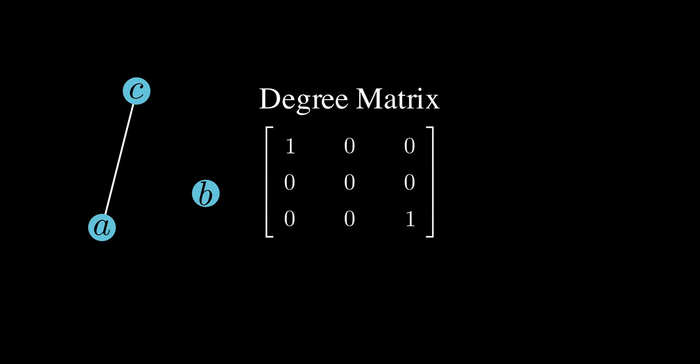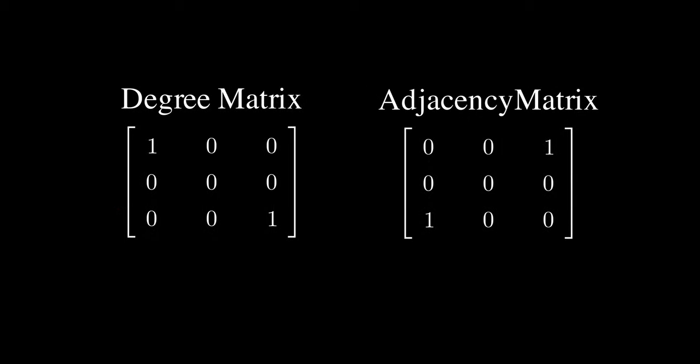And it's these two matrices that can tell us exactly how a graph behaves. Looking at just the degree matrix, the trace of the matrix, or the sum of the elements along the main diagonal, turns out to be twice the number of edges in our graph. Think about what the degree matrix is telling us, or if it helps, think of the individual degrees.